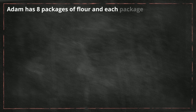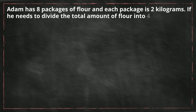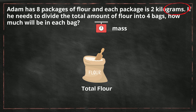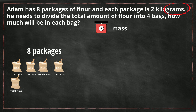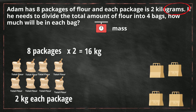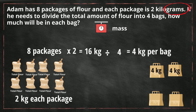Adam has eight packages of flour and each package is two kilograms. If he needs to divide the total amount of flour into four bags, how much will be in each bag? First, what are we measuring? I see 'grams,' so I know it's mass. Let's figure out how much flour Adam has in total. We have eight packages and each package has two kilograms. So let's multiply eight times two, which gives us a total of 16 kilograms. Now we need to divide it into four bags, so we take 16 divided by four, which equals four. So each bag will get four kilograms of flour.